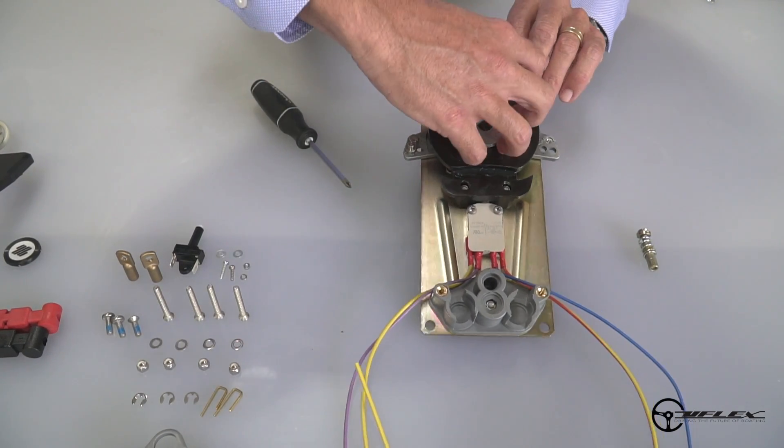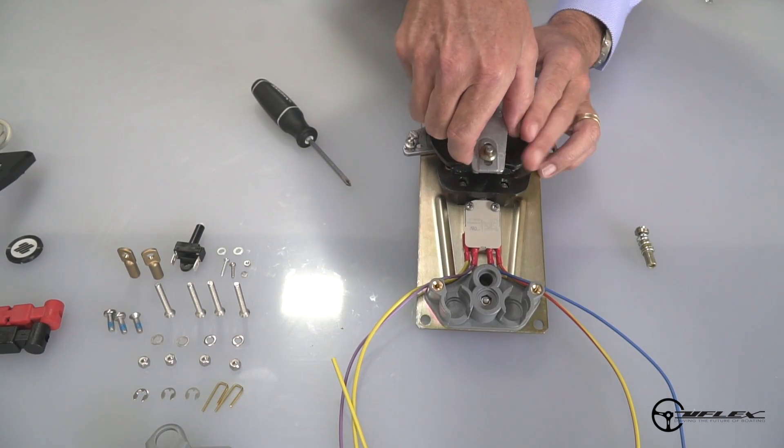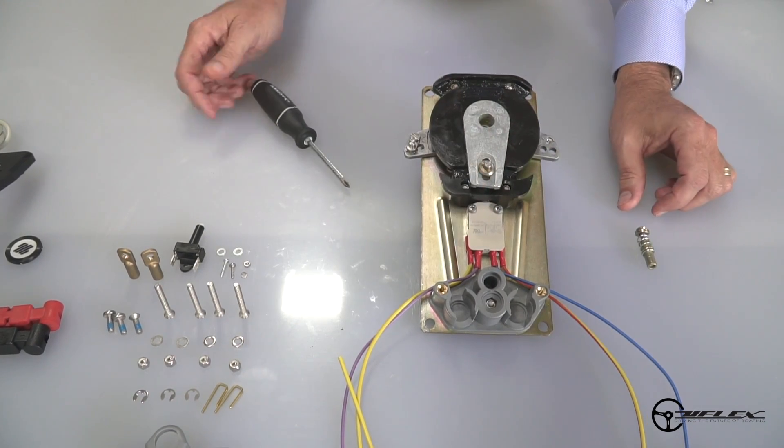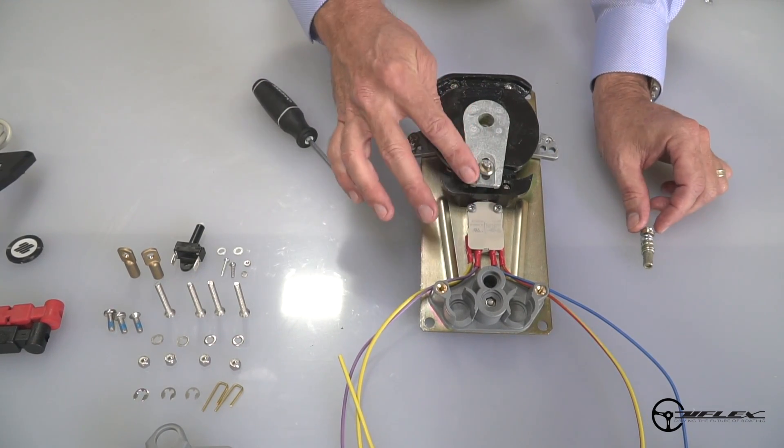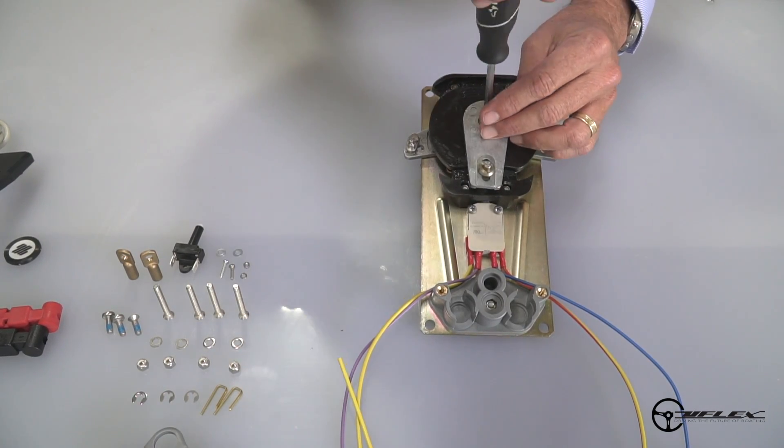I'm going to take the throttle cam, take it out, and rotate it 180 degrees to a condition like that. And now it's set up for pull for throttle. And I'm going to reinstall the spring-loaded screw.